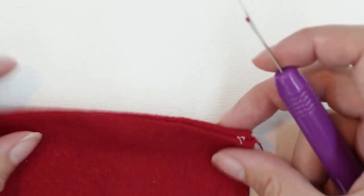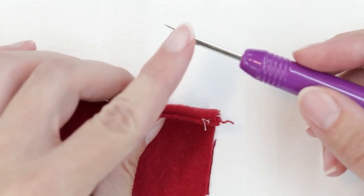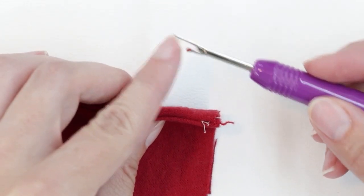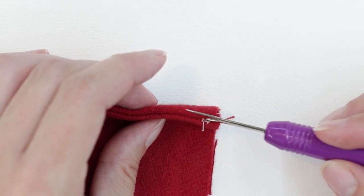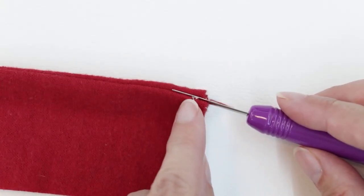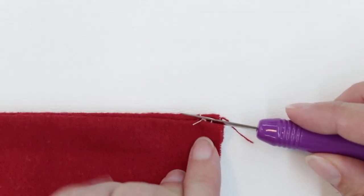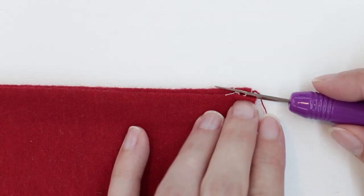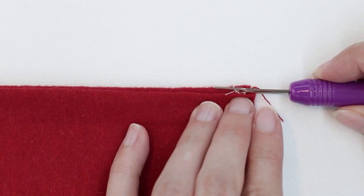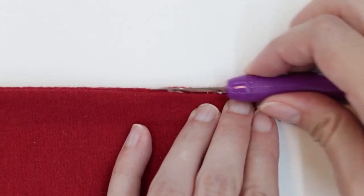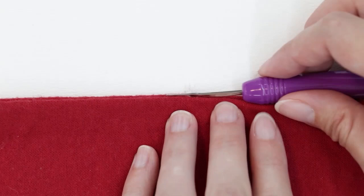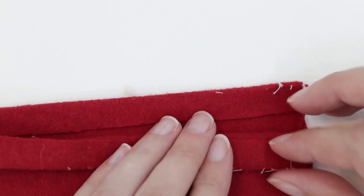Once you've got it started, slide the ball section of the seam ripper in between the layers so that it hooks right at the top edge of your fabric. Hold the fabric steady and slide your seam ripper. And our seam is unpicked.